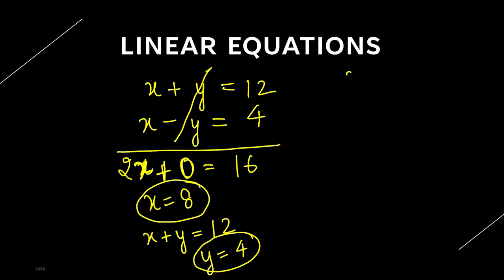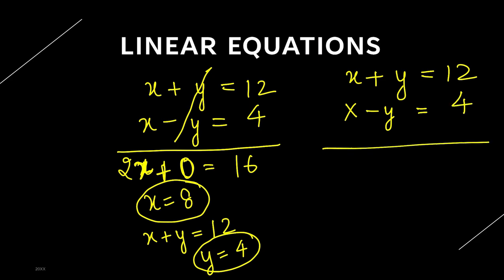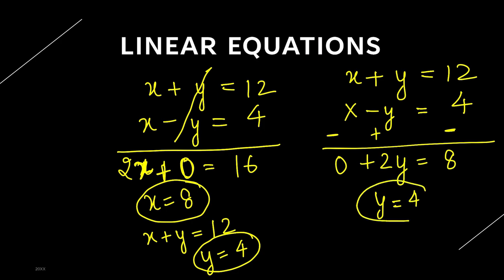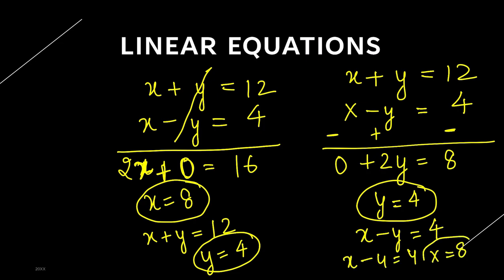Alternatively, rather than adding the 2 equations, you can do subtraction. When subtracting the second equation from the first, the sign of the second equation changes. So x minus x is 0, y plus y is 2y, and 12 minus 4 is 8, giving y equals 4. Using x minus y equals 4 with y equals 4: x minus 4 equals 4, so x equals 8. This is very basic mathematics for solving 2-variable equations.